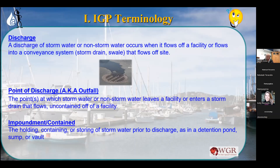If water doesn't leave your property, it's not a discharge. That comes in handy when we talk about monthly inspections, because one of the things you're supposed to do is determine whether there is water leaving your property. If you have a puddle somewhere but it's not leaving, it's not a discharge until it actually leaves your property. Impound is when you contain or hold onto water. So discharge is water leaving; impound is when you hang on to your water.